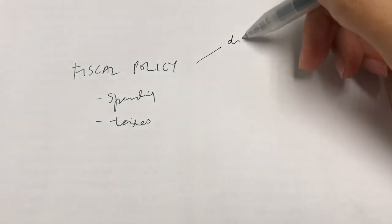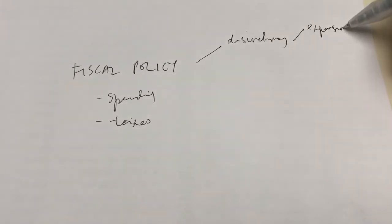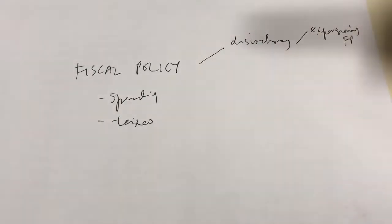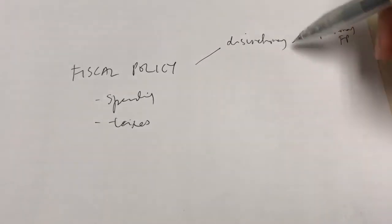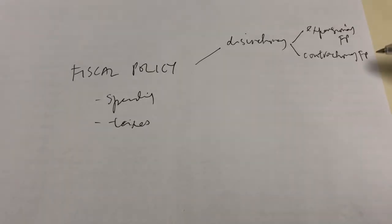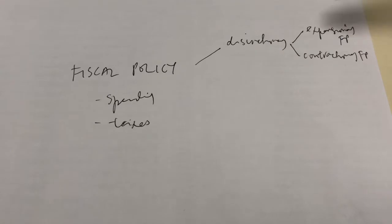There are generally two types of fiscal policy. One is discretionary fiscal policy, which can either be expansionary fiscal policy — where we try to expand or make the economy grow by using increased G or reduced T when the problem is a recession or high unemployment — or contractionary fiscal policy, which is applied during times of very high inflation to slow down the economy, using reduced spending or increased taxes.